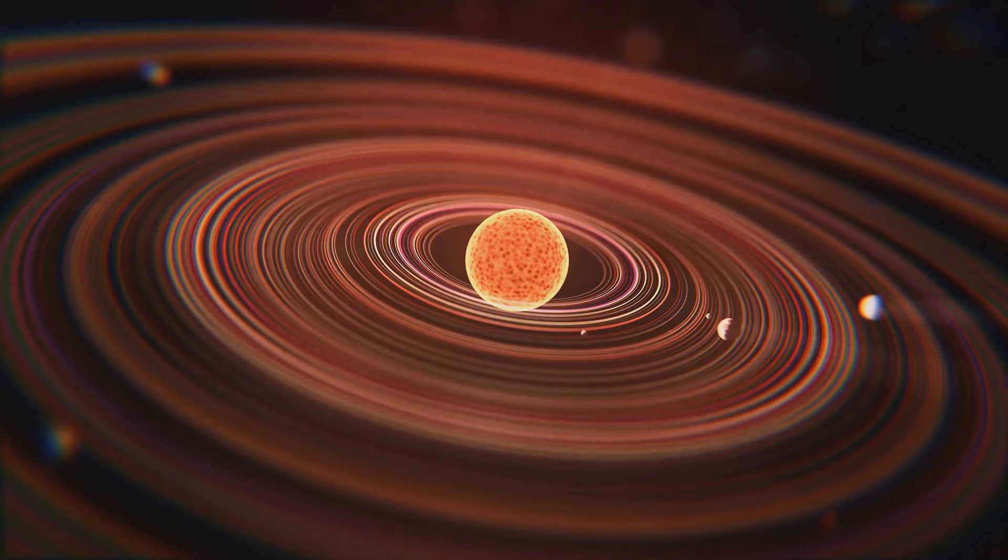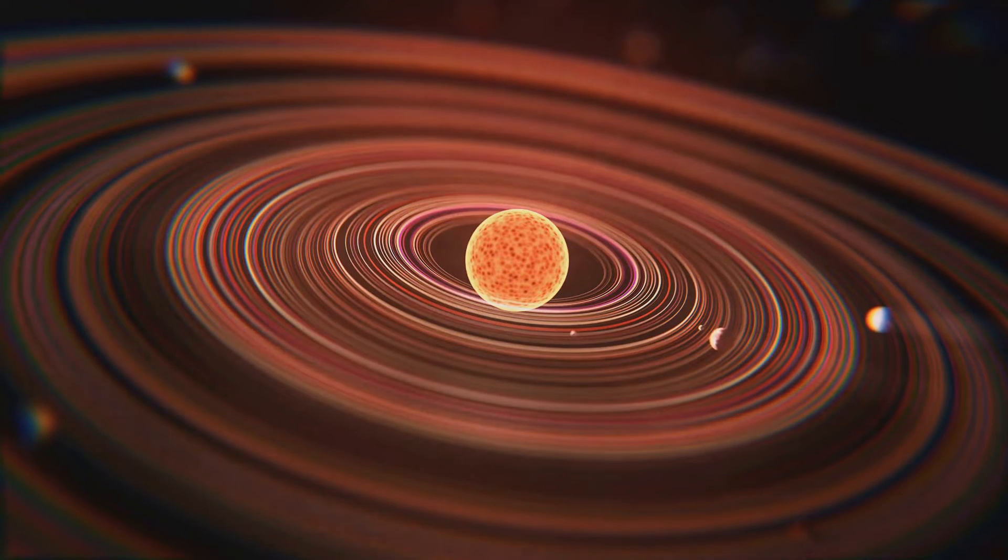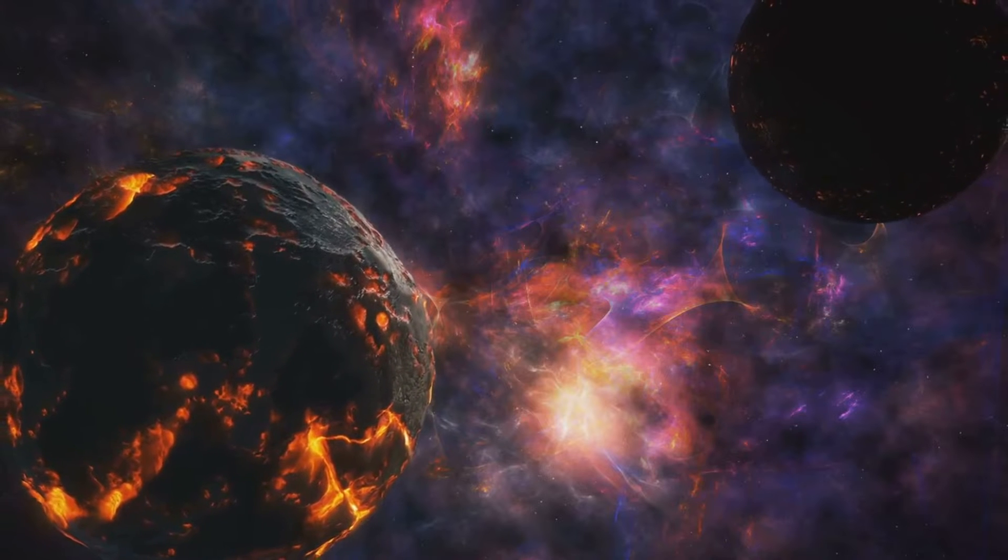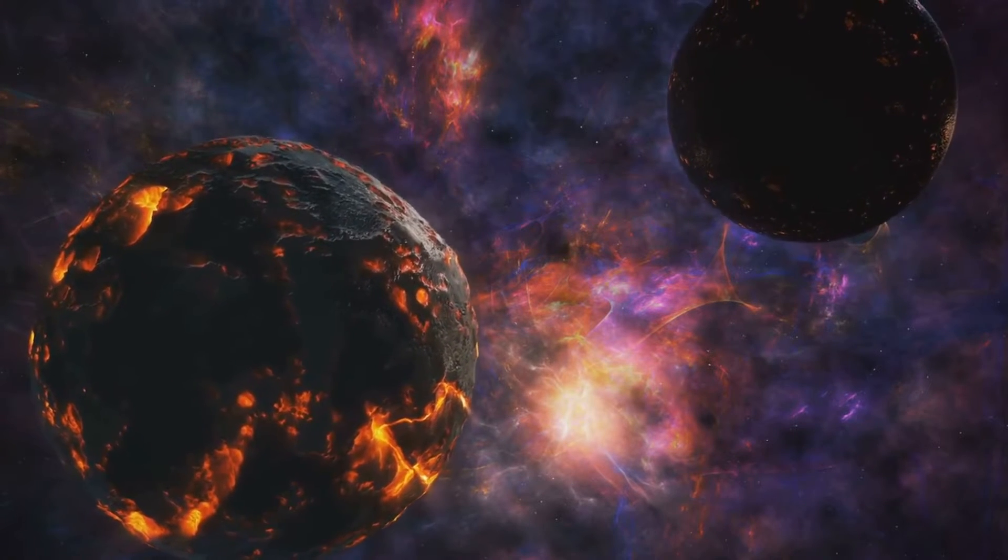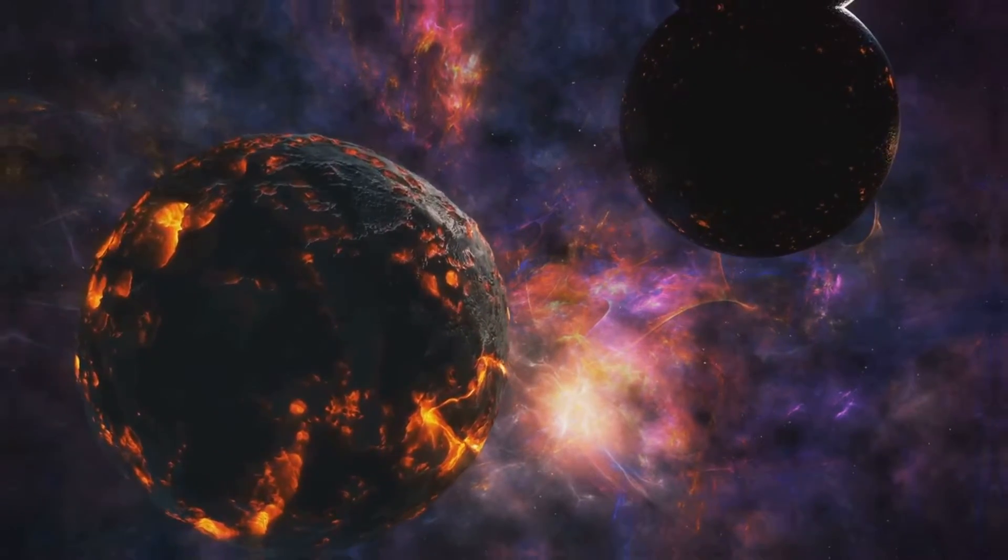As they move inward, these pebbles collide and merge, gradually growing into protoplanets. These protoplanets, with their increased gravity, attract even more pebbles and pieces, growing larger and larger until they become the planets we know today.